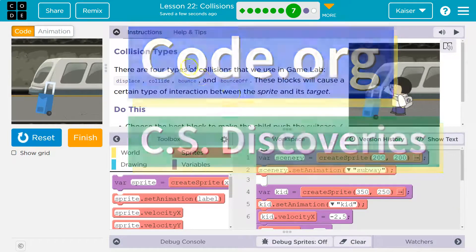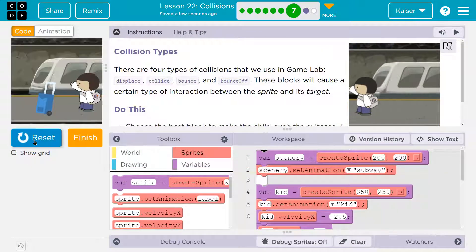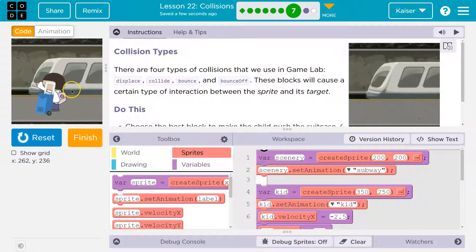This is code.org. Let's see what we're working on here: collision types. Let's run it. Get your bag thing, also known as the suitcase. Wait a minute. All right, collision types. There are four types of collisions that we use in Game Lab.